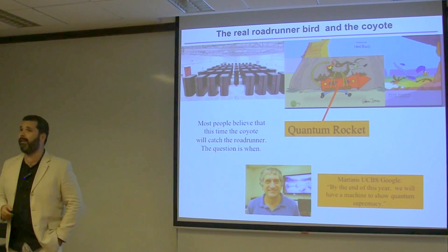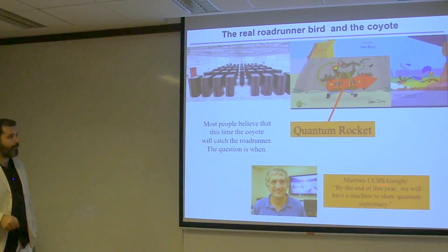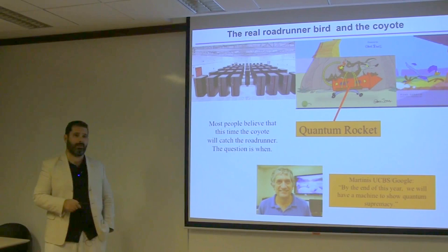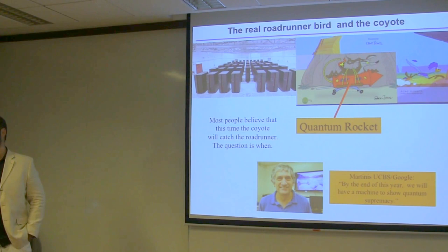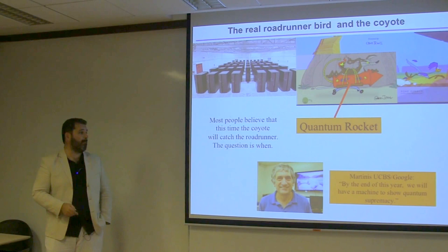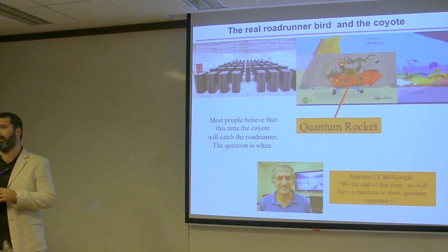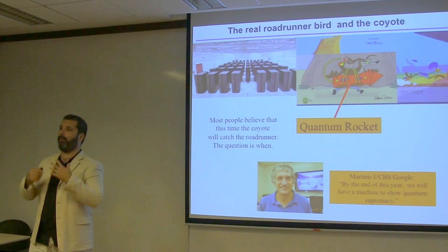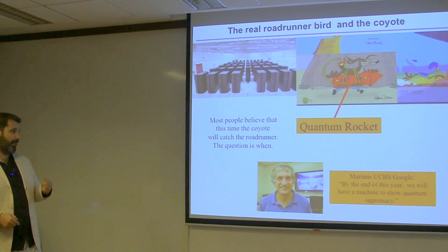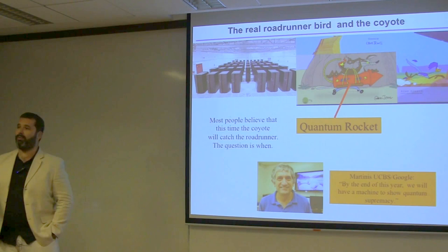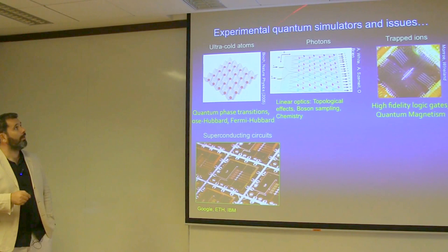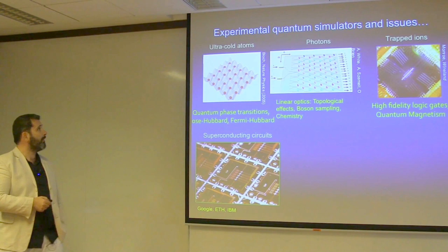According to this guy and many people in the field, this is a matter of time. John doesn't usually make strong statements, but this can be interpreted as one: by the end of the year, we will have a quantum machine that achieves quantum supremacy — it does something quantum, possibly useless, but it won't be reproducible by any classical machine. What we do in our group is more unusual for quantum computation and simulation.